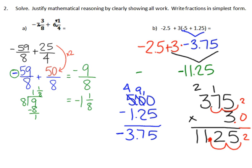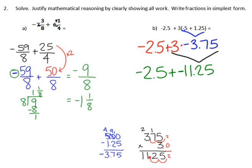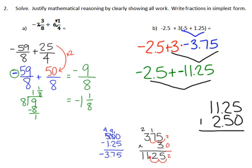Now we bring down the rest: negative 2 and 5 tenths with the plus sign. Our final step is to add two negative numbers together. These have the same sign, so I add the absolute values by lining up my decimal points. Adding a negative plus a negative gives an even larger negative number. So I get negative 13 and 75 hundredths as my final answer.